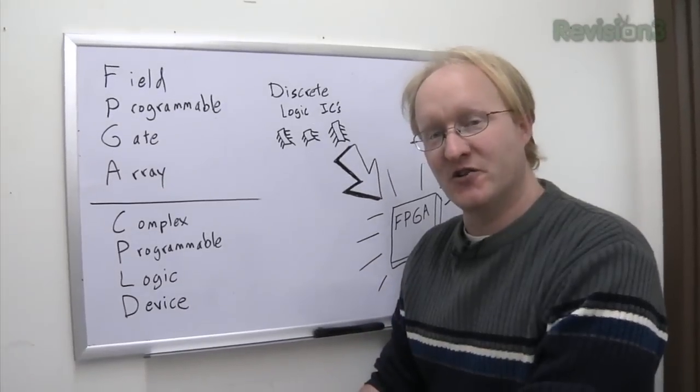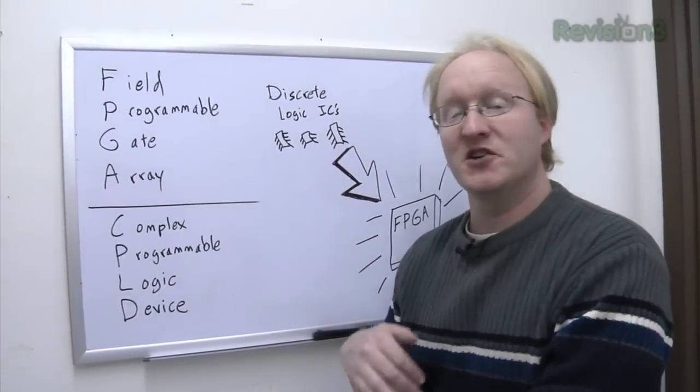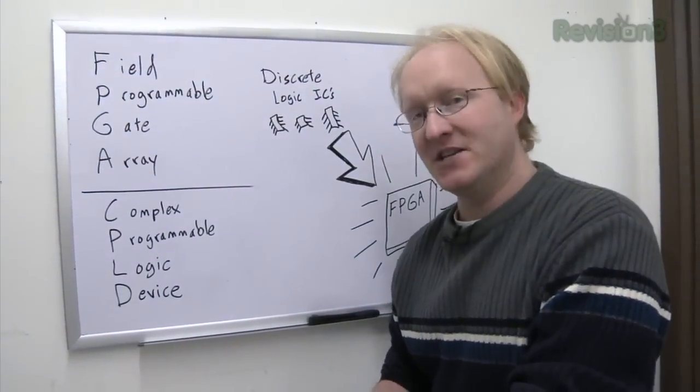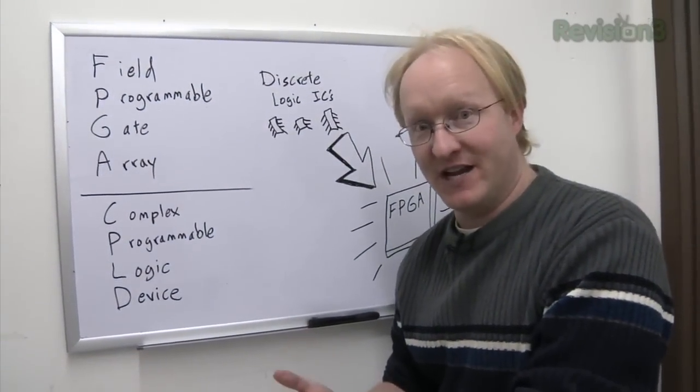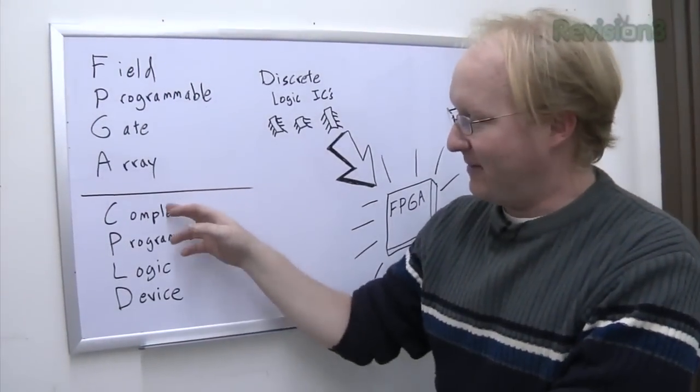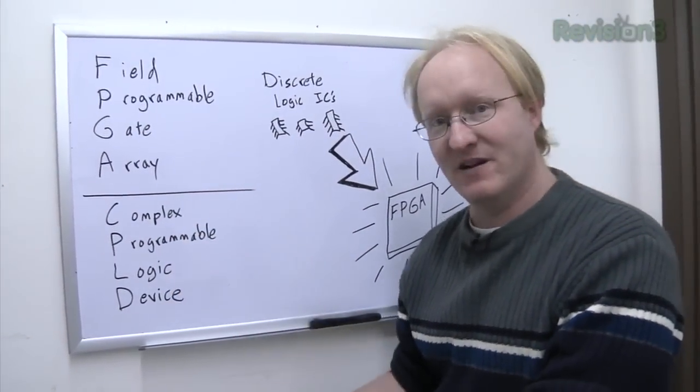You've seen us use microcontrollers many times before on the show. They're good for controlling external devices, like a 3D printer or perhaps an Xbox 360 Game Disk Changer. Today, we're going to be talking about FPGAs. Those are Field Programmable Gate Arrays. We're also going to be using a Complex Programmable Logic Device, or CPLD.